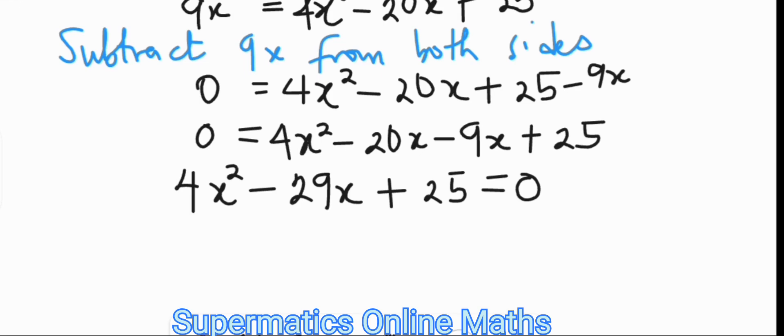Using the slide and divide method, we can write this by sliding 4 to 25 to multiply it, leaving us with x squared minus 29x plus 100 equals 0. That's the sliding part of the slide and divide method. We're going to go for the divide later.